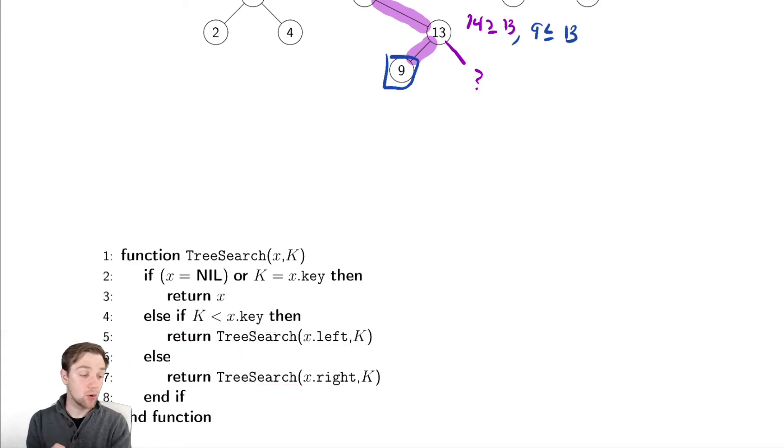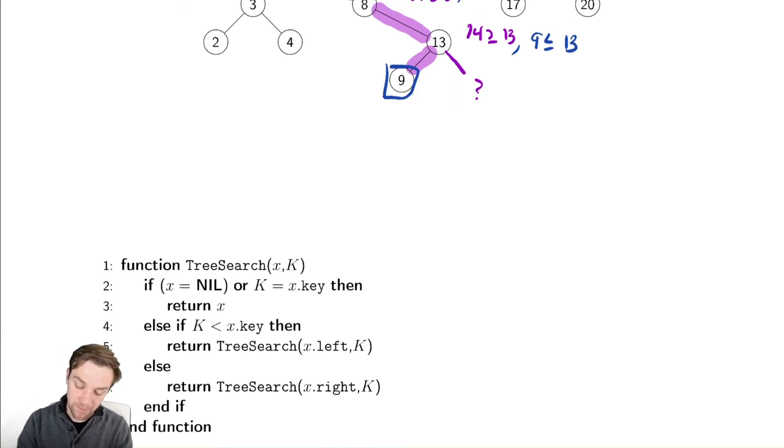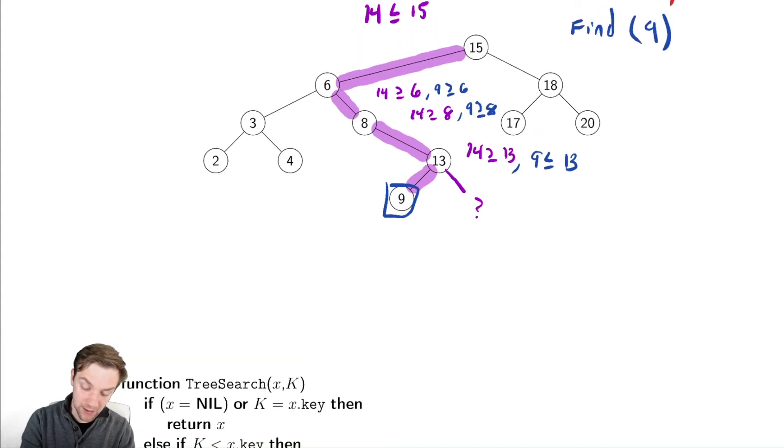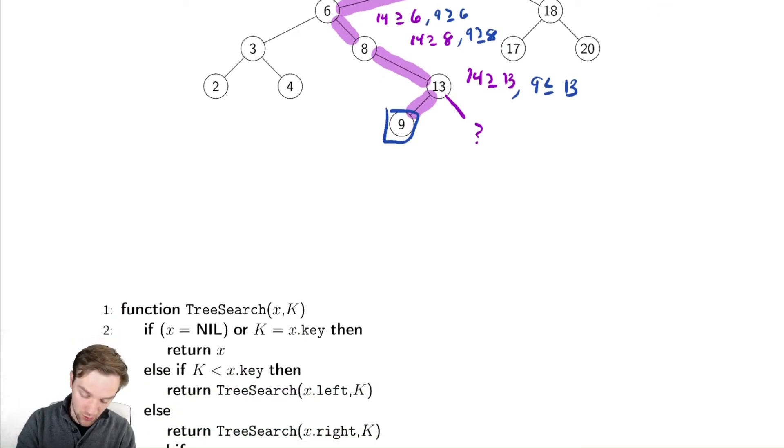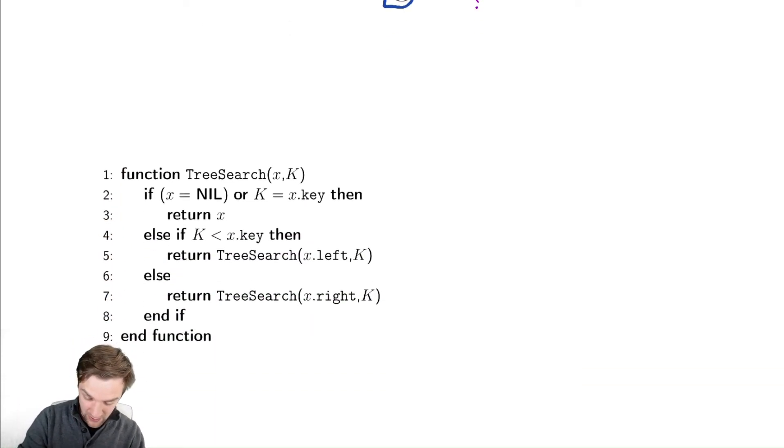However, the runtime of this algorithm is very simple to analyze if we just think about what's happening. We always descend the tree, and the worst we could do is go all the way to the value furthest away from the root, which conveniently we have an expression for. This algorithm is in theta of h, where h is the height.